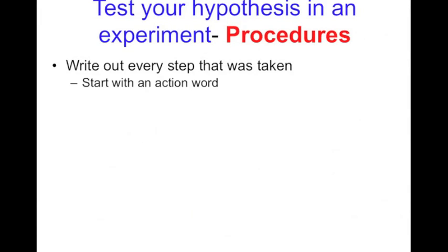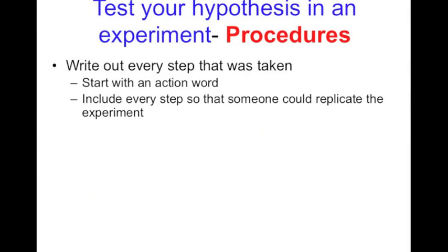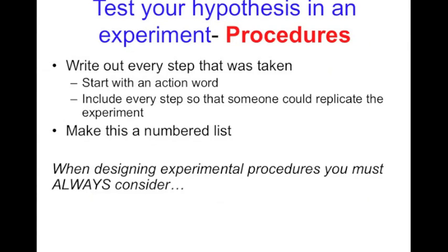After materials, we then write the procedures out. It's important to write out every single step that's taken. Good procedures, each step usually starts with an action word or a verb: do this, collect this, measure this, something like that. Every step should be in a way that someone could replicate it, but we don't want to have fluffy words. We want it to be very clear. This should be a numbered list so it's very easy to follow along with.